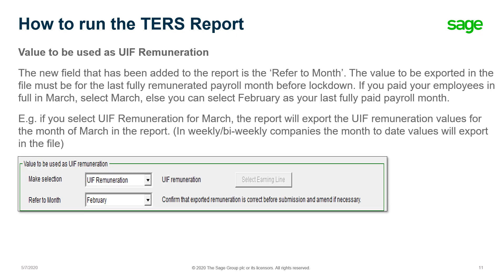The new field available in the report is called Refer 2 months. The value to be exported in the file must be for the last fully remunerated payroll month before the lockdown. If you paid your employees in full for March, then you will select March; otherwise you will select February as your last fully paid payroll month. For example, if you select UIF remuneration for March, the report will export the UIF remuneration values for the month of March. In weekly and bi-weekly companies, the month-to-date values will export in the file.